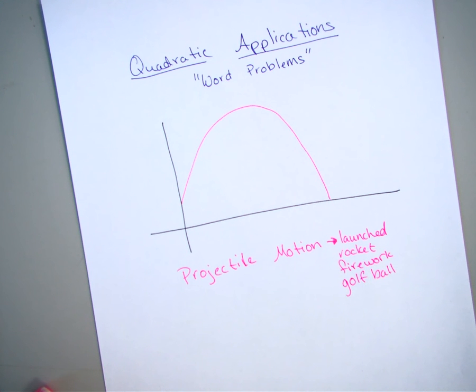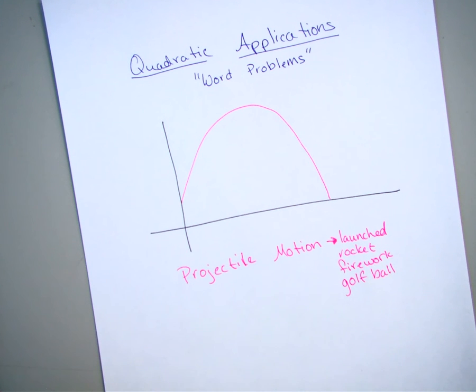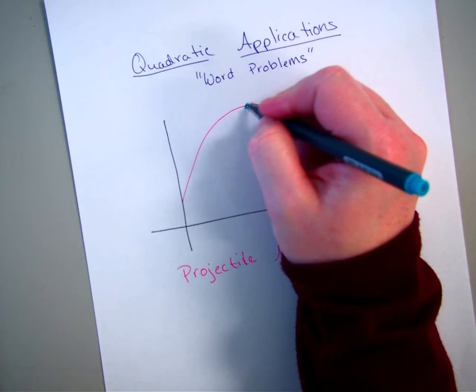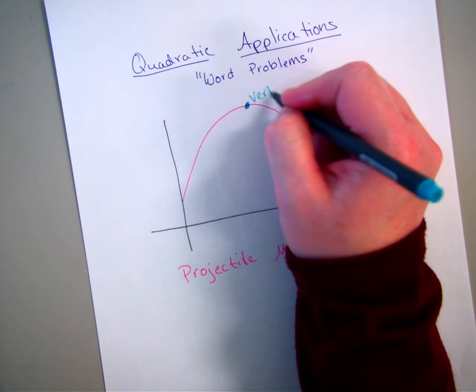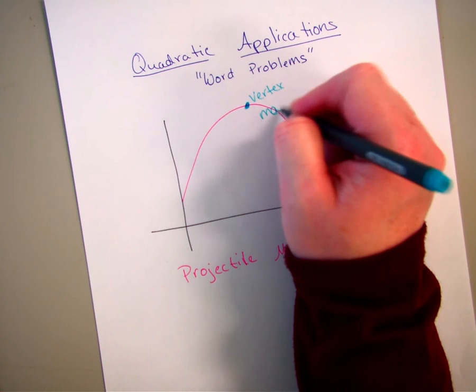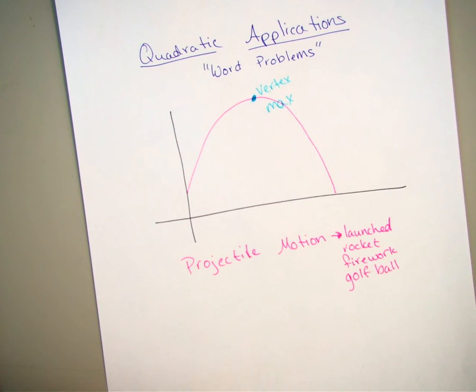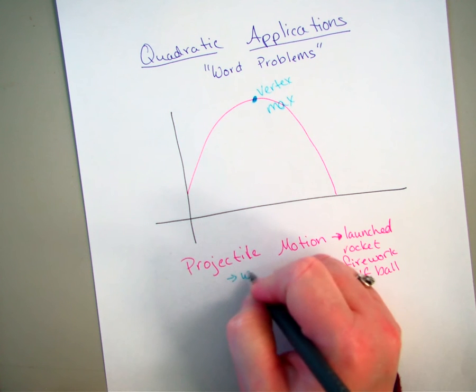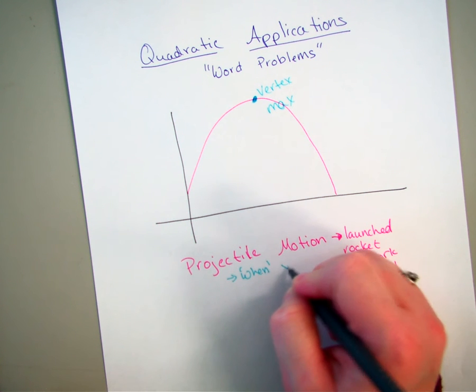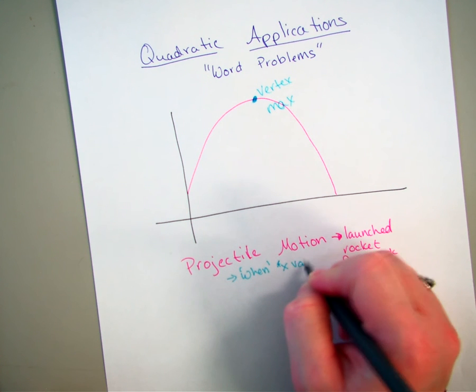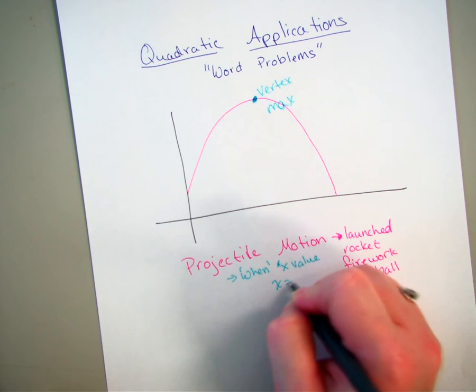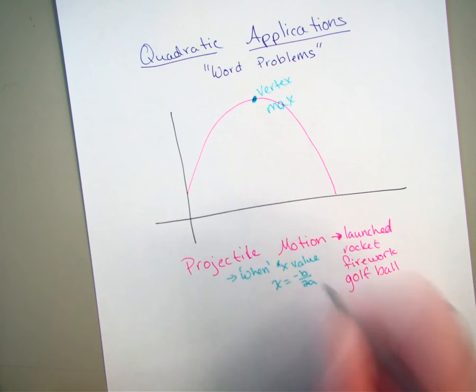So with our projectile motion questions, generally what they are looking for is they are looking for that vertex or that maximum. So what we have to keep in mind is they will either ask for when it reaches that maximum. So that means you're looking for your x value. So to get that, that's going to be your negative b over 2a.